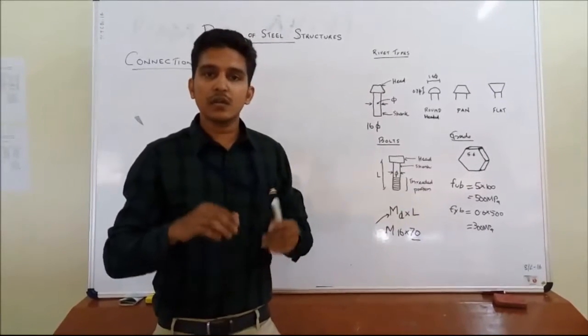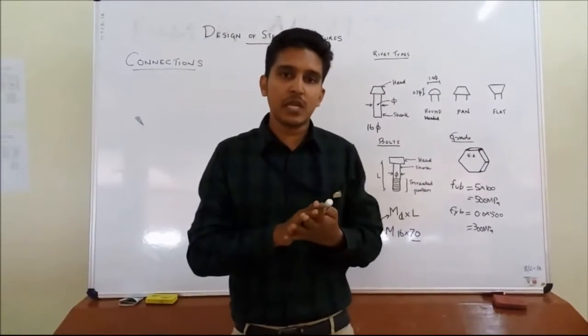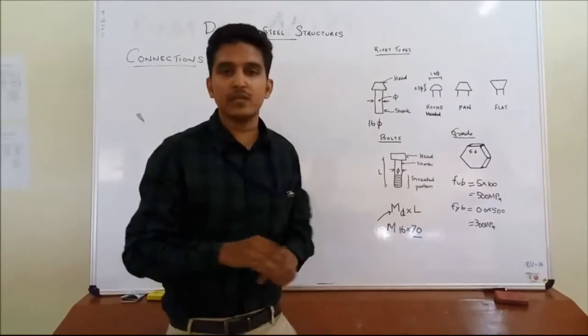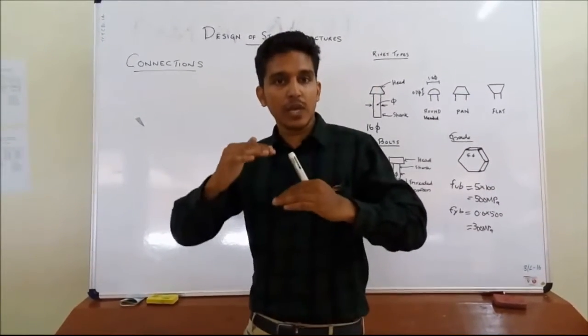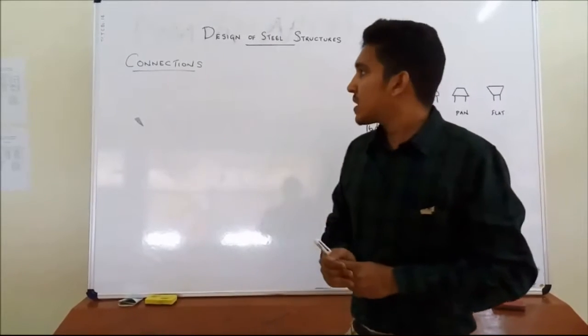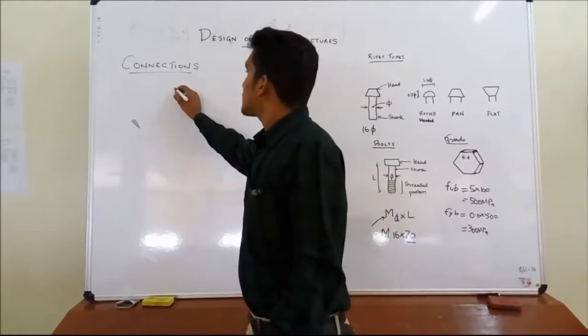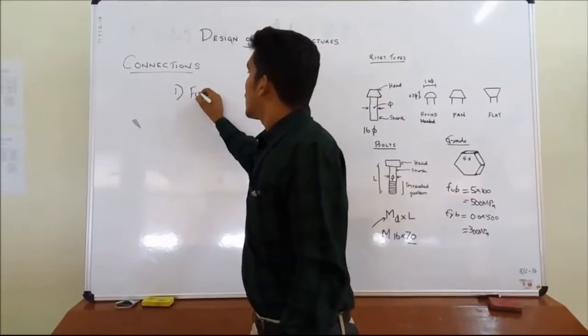That is how the bolts and the rivets are classified. Now, basically, connections are, I told you, there are three, four types of connections. We see bolts and rivets. Now we see the classification of different types of connections.